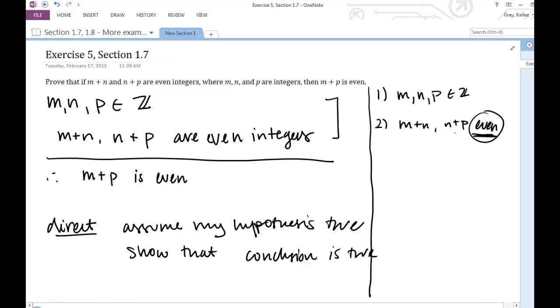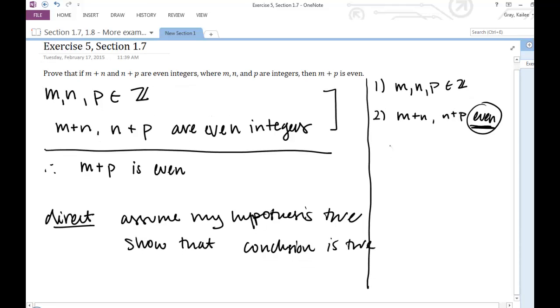If these integers, this sum of integers, if it's even, then I know by definition of even integers, then this sum is equal to 2 times some integer, where k is an integer. Now, be really careful. We can't say n plus p is equal to 2k because it's not necessarily the same number. So I need to make sure to introduce a new variable here. So this is just using the definition of even integers here.